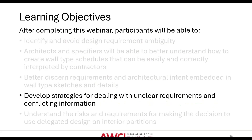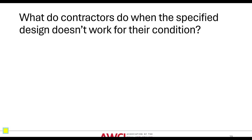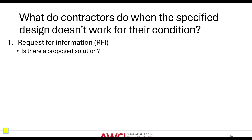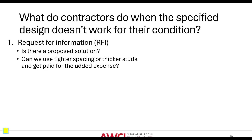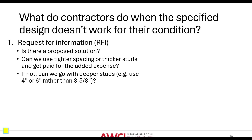Now let's develop strategies for dealing with unclear requirements and conflicting information — understanding possible opportunities. What do contractors do when the specified design does not work for their condition? You can request more information, put out an RFI, and ask if there's a proposed solution. Can we use tighter spacing or thicker studs and get paid for the added expense? Because going with thicker studs or beyond what was specified is an add compared to what was bid.